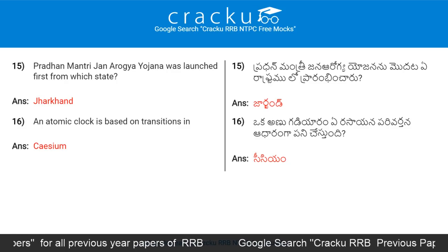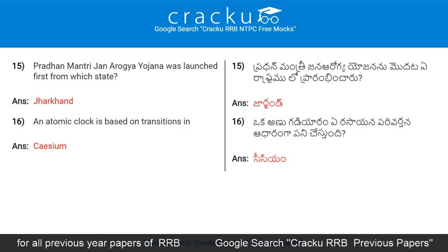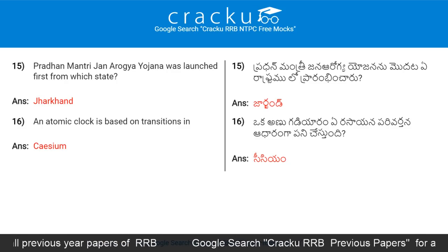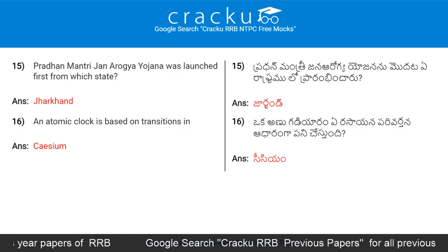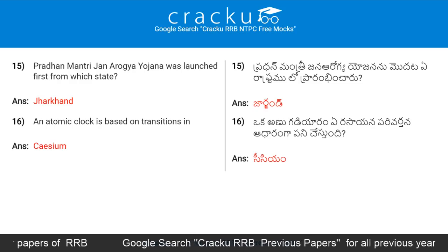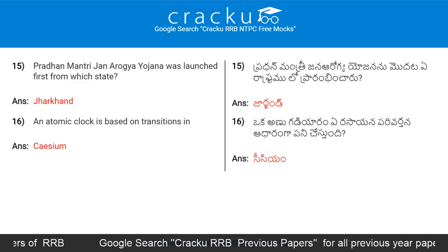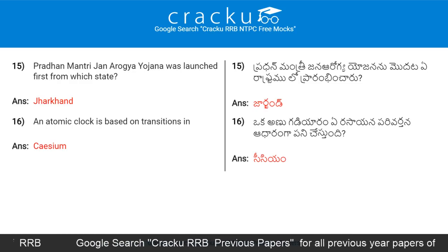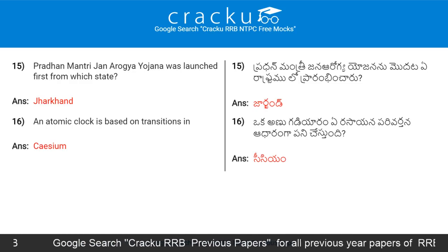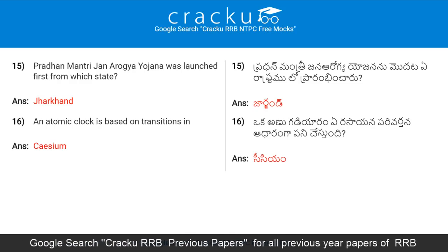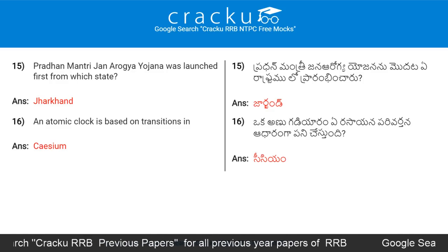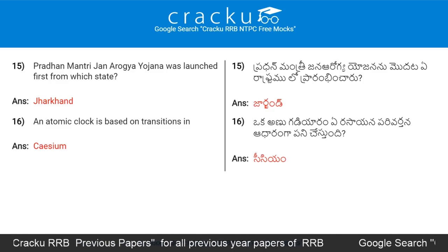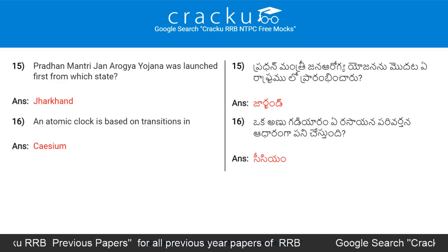Pradhan Mantri Jan Arogya Yojana was launched first from which state? Jharkhand. An atomic clock is based on transitions in which element? Cesium.